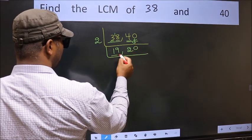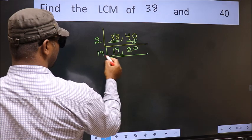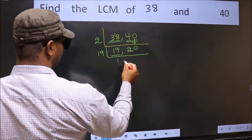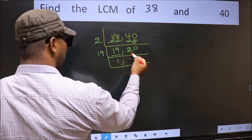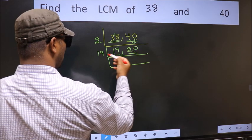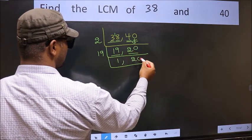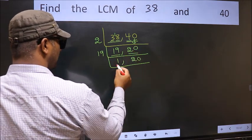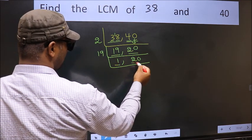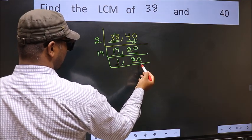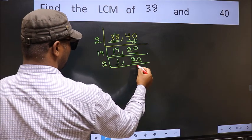Now here we have 19. 19 is a prime number, so 19 once is 19. The other number 20 is not divisible by 19, so we write it down as it is. We got 1 here, so focus on the other number 20. 20 is 2 tens, so 20 divided by 2 gives 10.